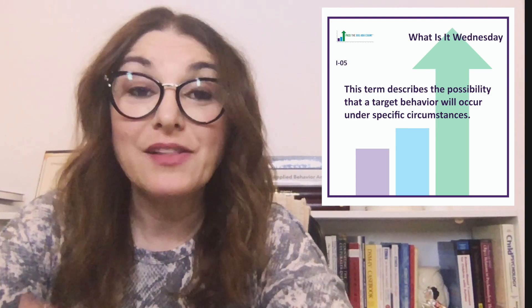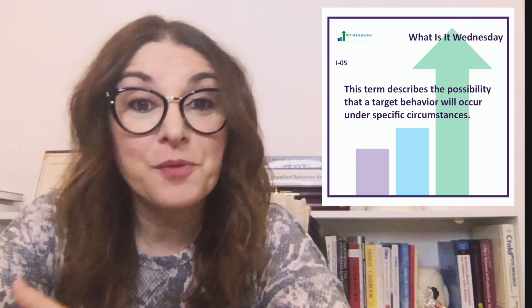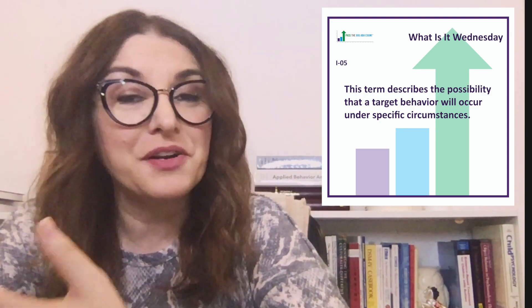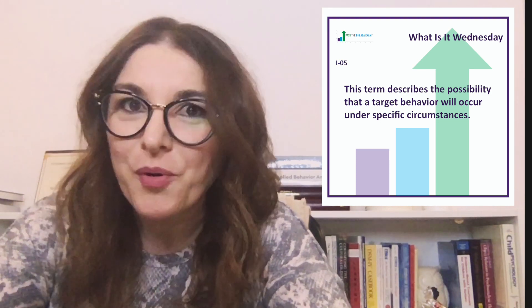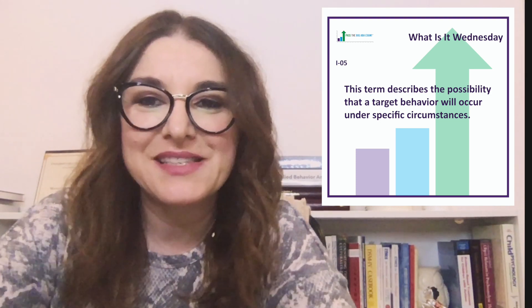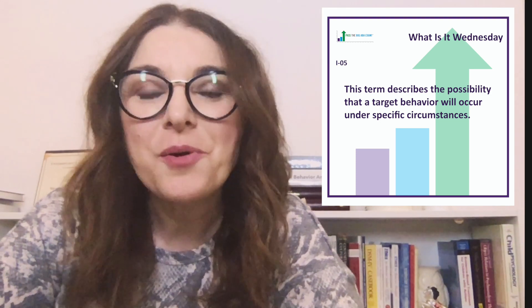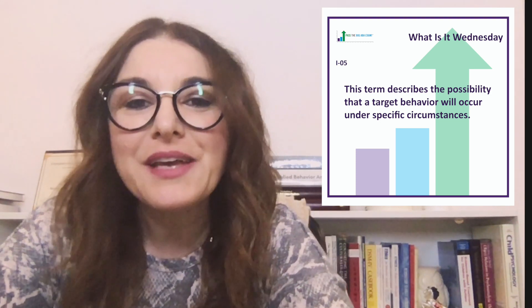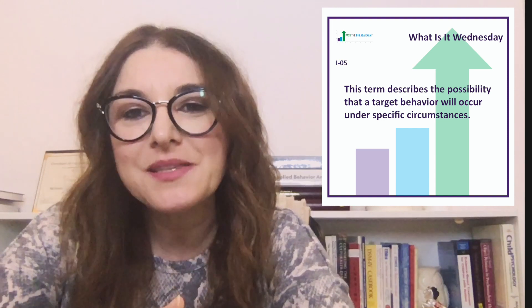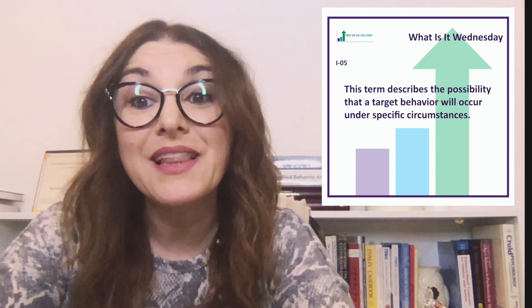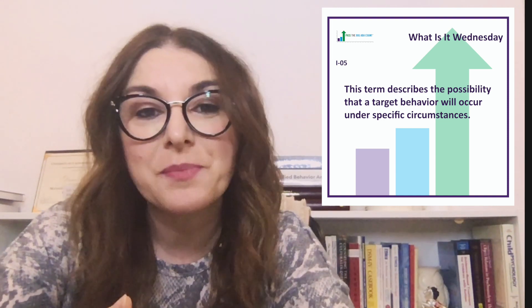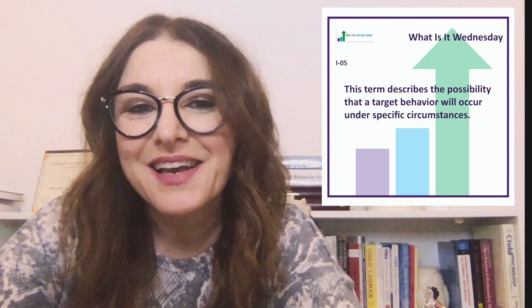By looking at the proportion of the occurrence of the behavior as reported in that ABC data. So basically, we're looking at what precedes the behavior — the antecedents — as well as what follows the behavior — the consequences.